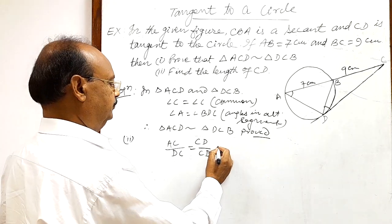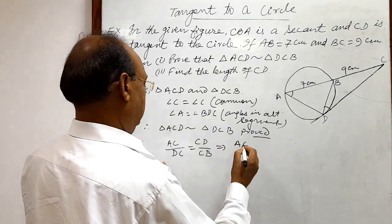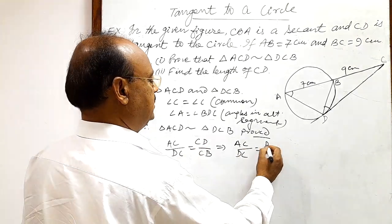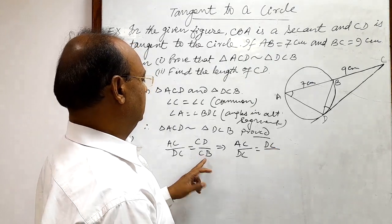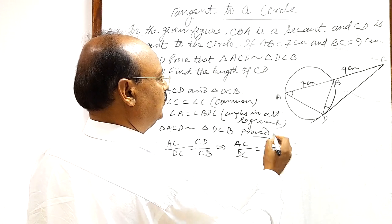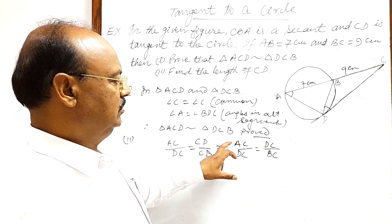Correct. So here AC/DC, this CD can also be written as DC and this CB can be written as BC. There is no problem. Correct. So now here we will try to find out this length.